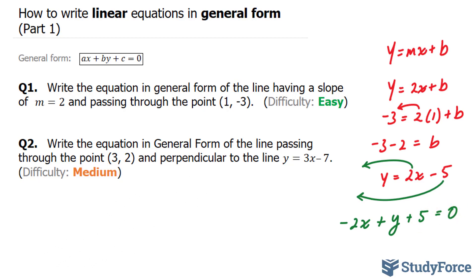Now some teachers may not like you to have a leading negative, and notice that our leading coefficient negative 2 is negative. So we can multiply the whole equation by negative 1, and this step is totally up to you. So if I multiply this whole equation by negative 1, I end up with positive 2x minus y minus 5 equals 0. That's the solution to question 1.